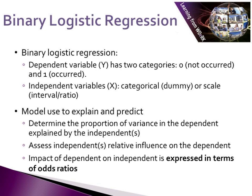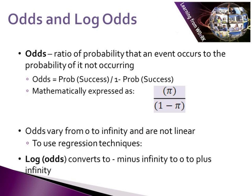Odds ratios are an important part of understanding binary logistic regression. To explain odds ratios and log odds better — odds can be calculated for any type of event, and an odd is a ratio of the probability that an event occurs to the probability of it not occurring. It's the probability of success divided by one minus the probability of success, as you can see mathematically expressed on the slide.